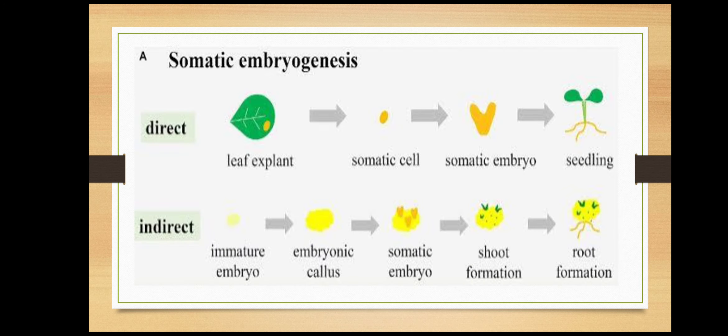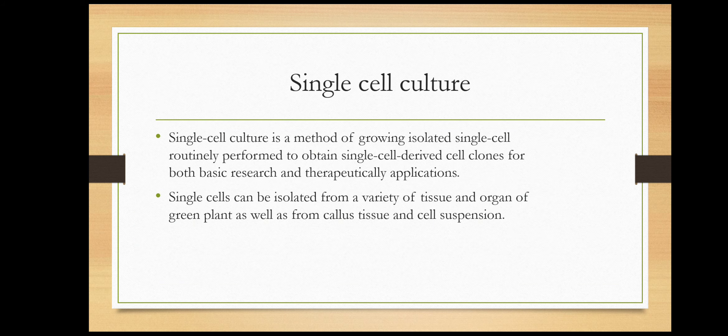Here is an example of somatic embryogenesis. The final type is single cell culture. Single cell culture is a method of growing isolated single cells, routinely performed to obtain single cell-derived cell clones for both basic research and therapeutic applications. Single cells can be isolated from a variety of tissues and organs of green plants, as well as from callus tissue and cell suspensions. Thank you.